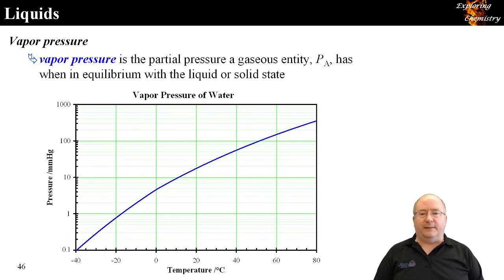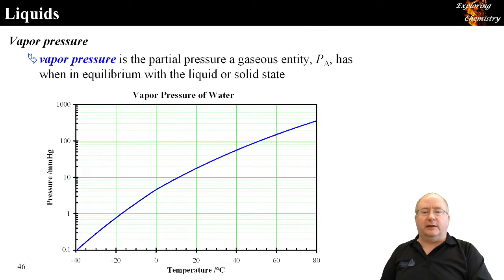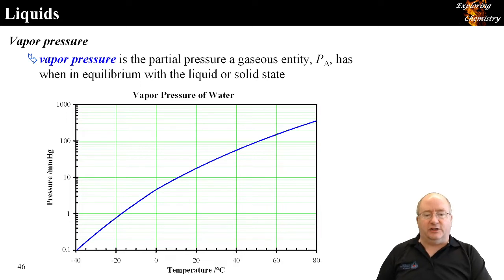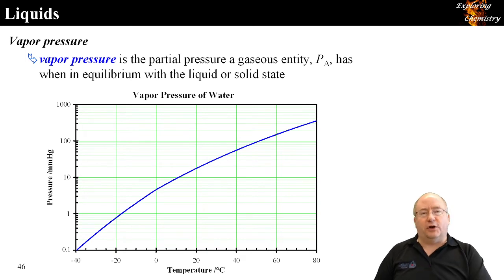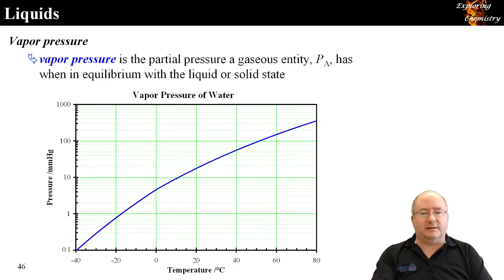Vapor pressure is the partial pressure of a gaseous entity — given the symbol P_A — at equilibrium between the gas and either the liquid or solid state. The figure shows the vapor pressure of water on a logarithmic scale going up by four orders of magnitude over this temperature range. Have you ever heard the term 'it's too cold to snow' or 'it needs to warm up to snow'?